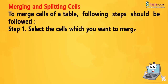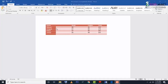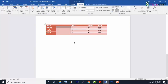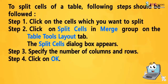Merging and splitting cells. To merge cells of a table, following steps should be followed. Step 1: Select the cells which you want to merge. Step 2: Click on Merge Cells in the Merge group on the Table Tools Layout tab. It will merge all the selected cells. To split cells of a table: Step 1: Click on the cells which you want to split. Step 2: Click on Split Cells in the Merge group on the Table Tools Layout tab. The Split Cells dialog box appears. Step 3: Specify the number of columns and rows. Step 4: Click on OK.